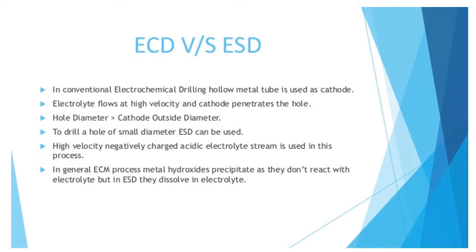Electro stream drilling. This is the ECD vs PSD. In conventional electrochemical drilling, ECD, a hollow metal tube is used as a cathode. Electrolyte flows at high velocity and the cathode penetrates the hole. The hole diameter is greater than the cathode outside diameter.